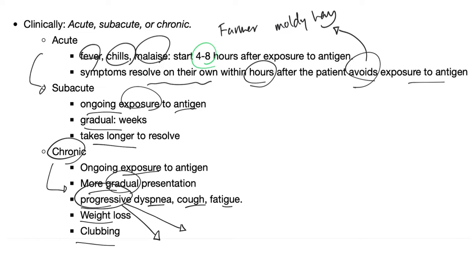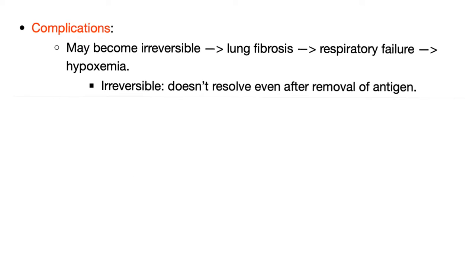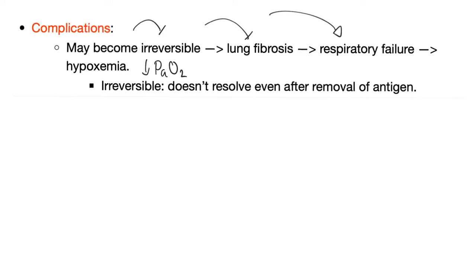What are the complications of hypersensitivity pneumonitis? The condition may become irreversible, leading to lung fibrosis, respiratory failure, and even hypoxemia — defined as decreased PaO2, the partial pressure of oxygen in the blood (free oxygen not bound to hemoglobin). It may not resolve even after removal of the antigen.